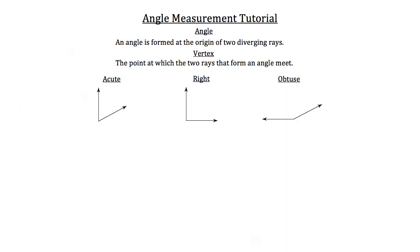Now the vertex that we're referring to is this point right here on these angles, the point at which the two rays that form that angle meet. Right there, that little dot on each of those is the meeting place of those two diverging rays.